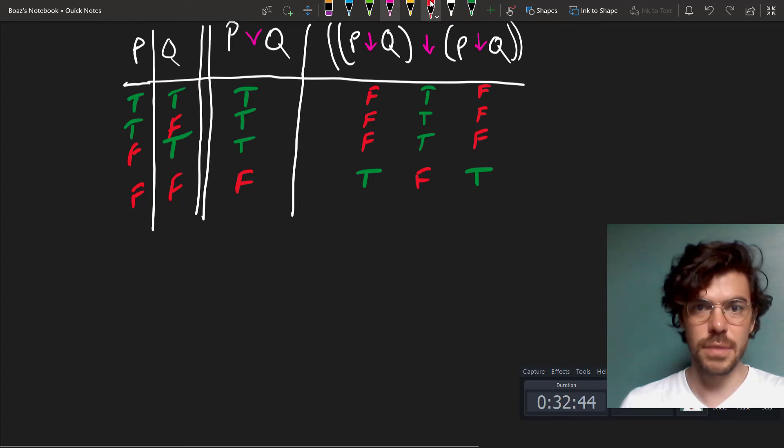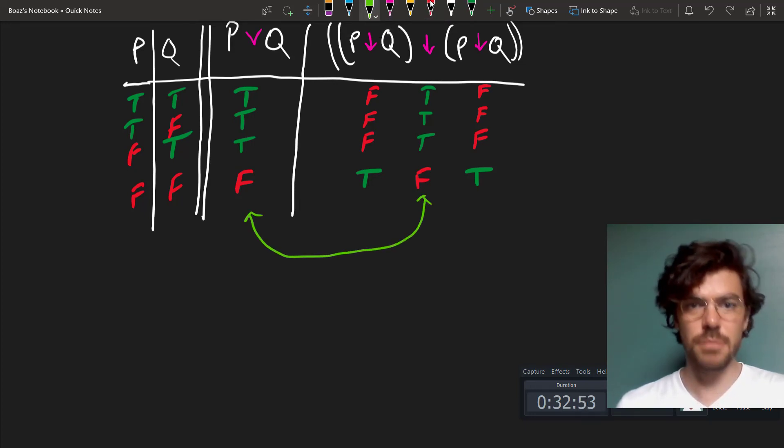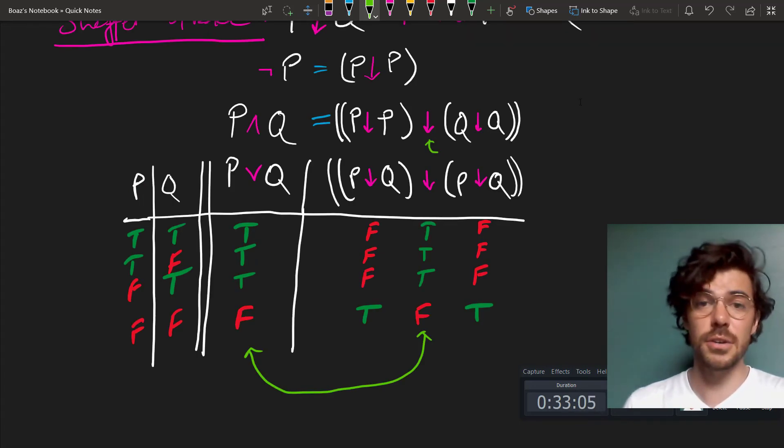And this is evidently just the same as this over here. So we've managed to construct disjunction using just our Sheffer stroke. And if you're curious, I would encourage you to try running a truth table for not p up here or p and q down here. Now, we're not going to use the Sheffer stroke in this class